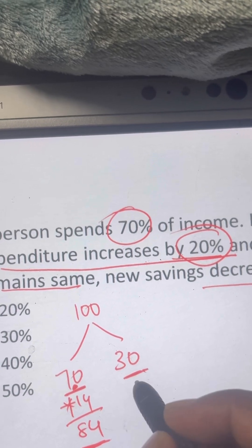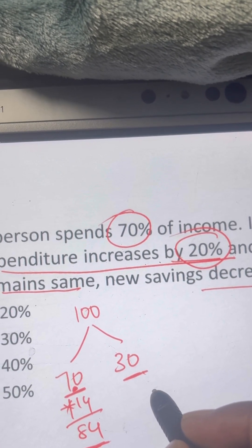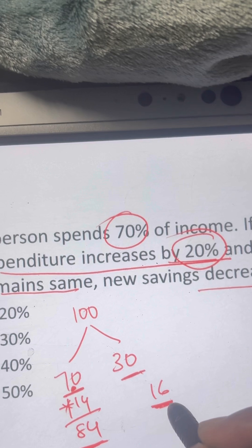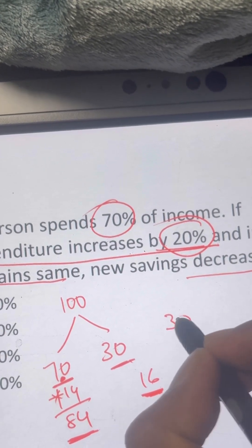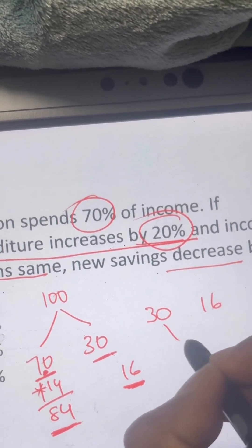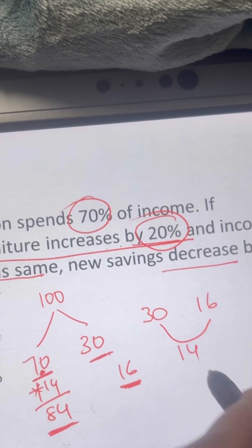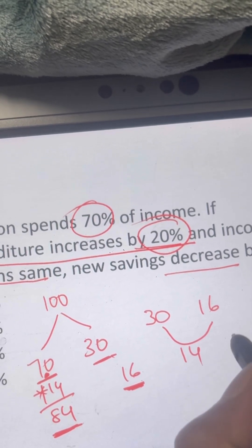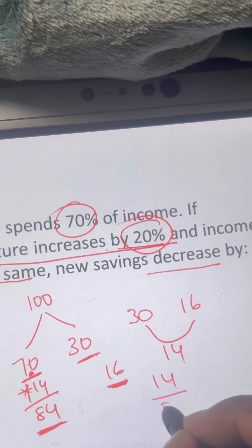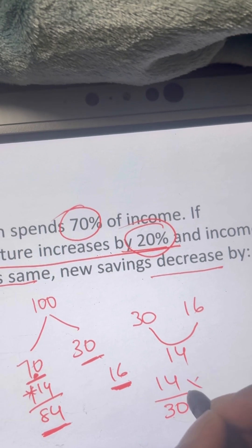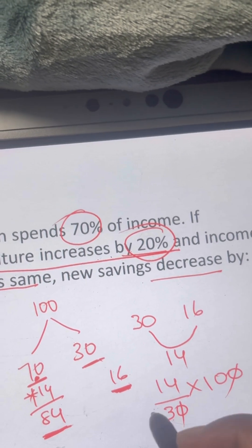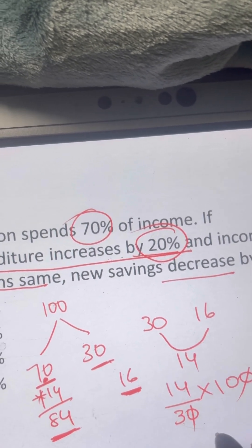The new savings are only 16 rupees. Actual savings were 30, new savings are 16 — a reduction of 14 rupees. This 14 as a percentage of 30 is 14/30 × 100 = 140/3. Simplify it and comment your answer.